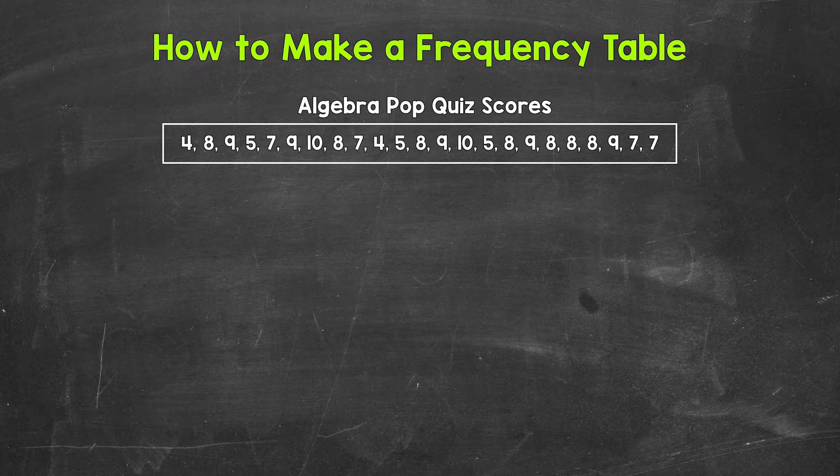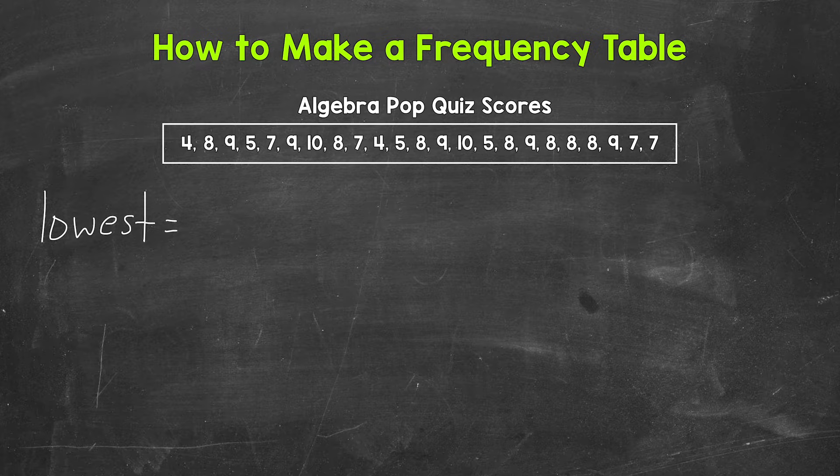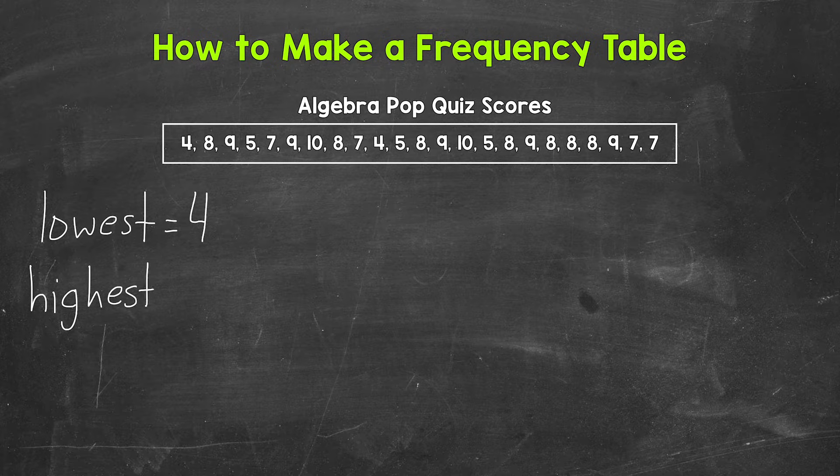Let's start by finding the lowest score and highest score. We need to know this in order to know where to start and end our table. So the lowest score is four and the highest score is 10.